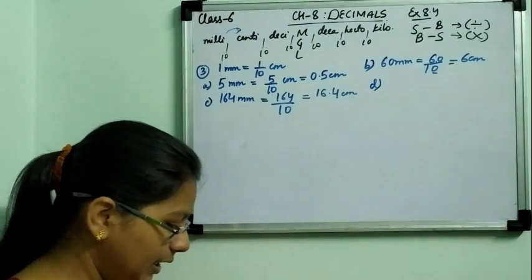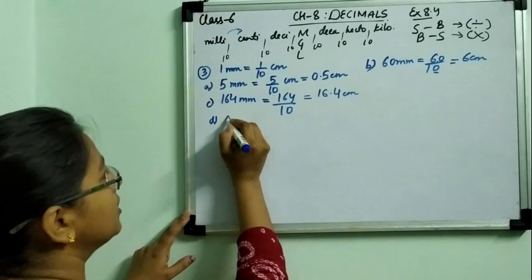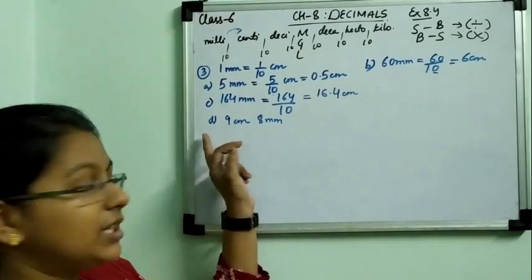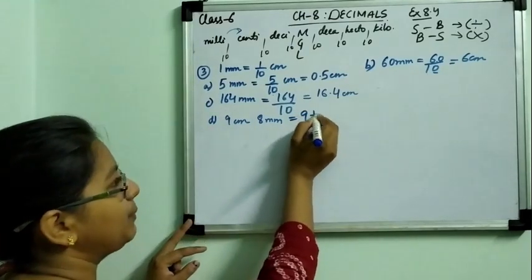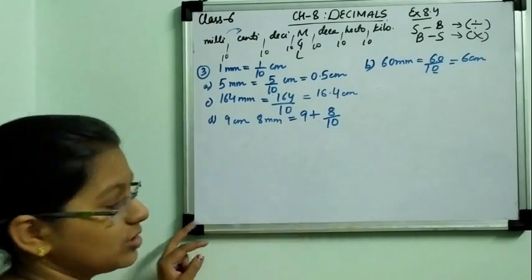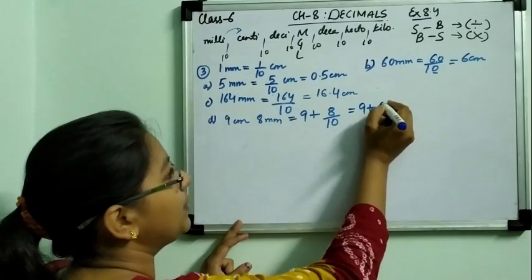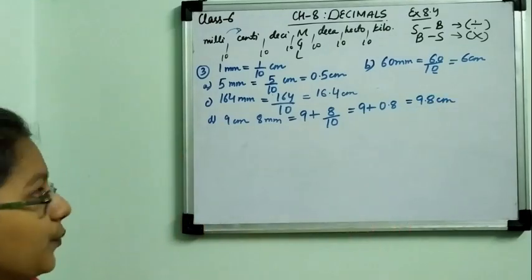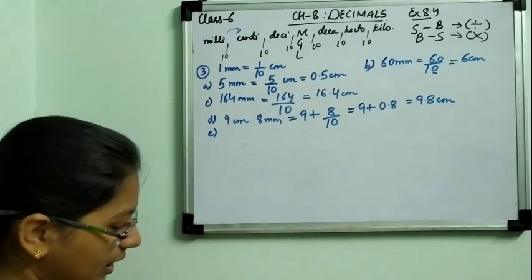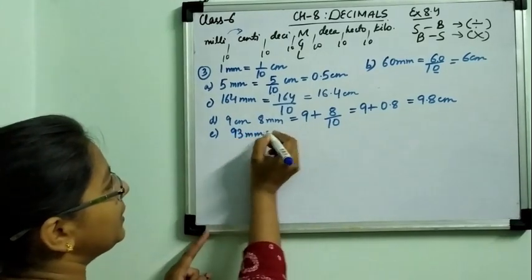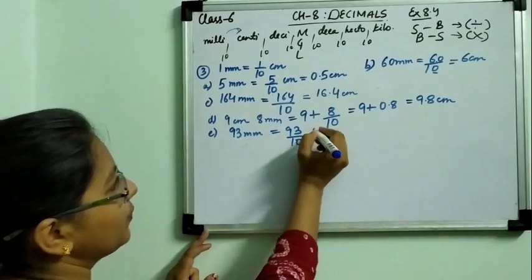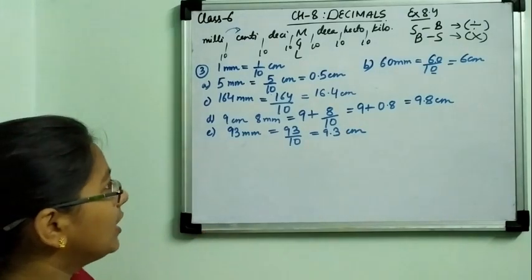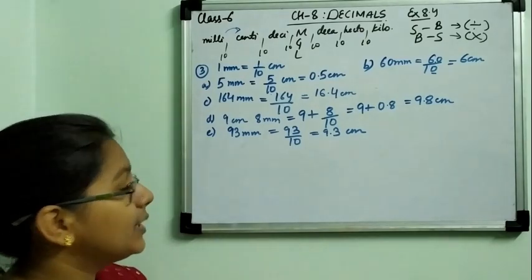Now part D: it is 9 centimetre and 8 millimetre. The 9 centimetre is already in centimetre so no need to change it — it stays as 9. The 8 millimetre will be converted: 8 divided by 10 equals 0.8. So 9 plus 0.8 gives 9.8 centimetre. Similarly in part E it is 93 millimetre: 93 divided by 10 equals 9.3 centimetre. So we have converted all millimetres to centimetres by dividing by 10.